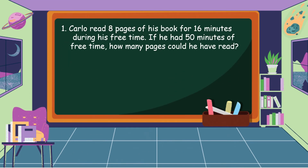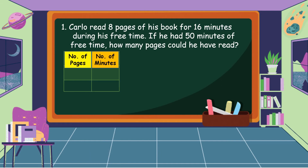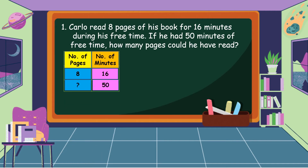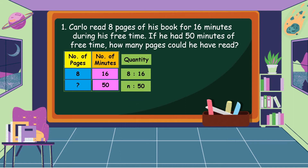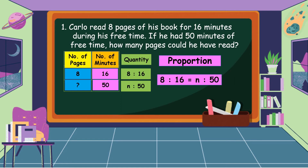In this problem, our question is: how many pages could he have read? To answer our problem, let's analyze using a table. Carlo read 8 pages of his book in 16 minutes. If he had 50 minutes of free time, how many pages could he have read? We're going to make two ratios: the first ratio is 8 is to 16, and the second ratio is n is to 50. We use n as our variable because we don't know yet how many pages he could read in 50 minutes. We're going to make a proportion: 8 is to 16 is equal to n is to 50.